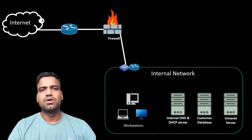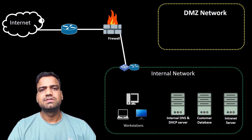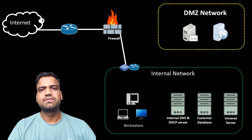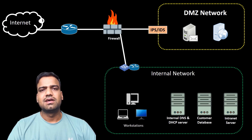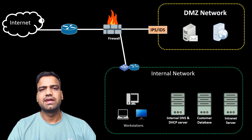The firewall blocks all traffic from the internet except for traffic that is destined for specific web servers. Certain services like web servers, email servers, or public-facing applications are placed in the DMZ. This allows external users to access these services without directly interacting with the internal network.